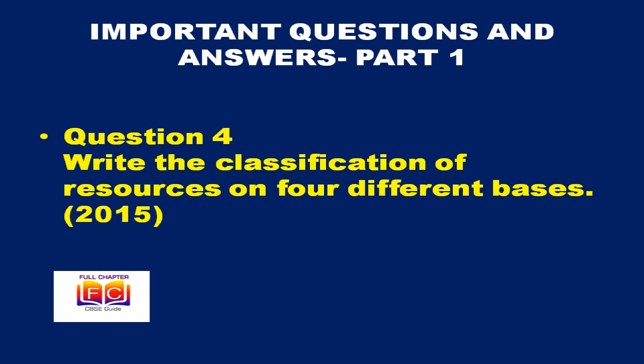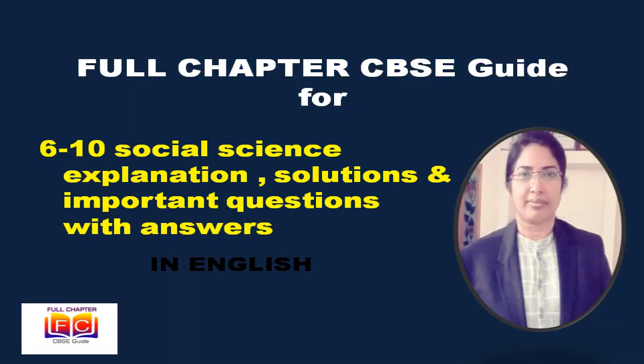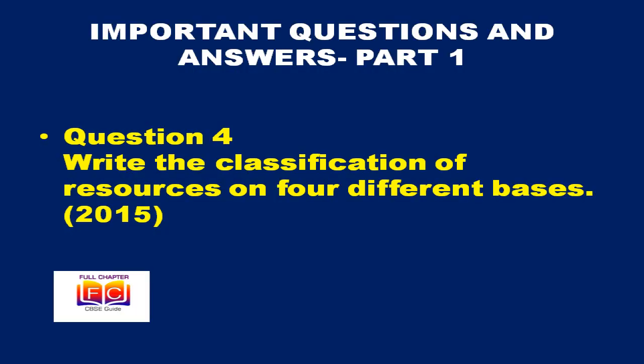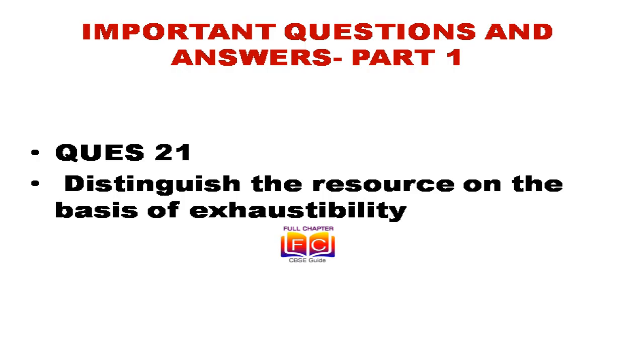Question 4: Write the classification of resources on four different bases. Resources can be classified in the following four ways: on the basis of origin — biotic and abiotic; on the basis of exhaustibility — renewable and non-renewable; on the basis of ownership — individual, community, national, and international; on the basis of status and development — potential, developed, reserve, and stock.